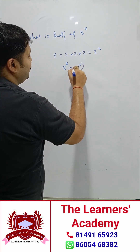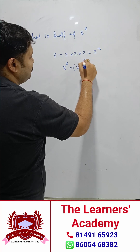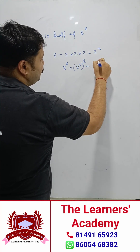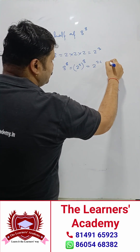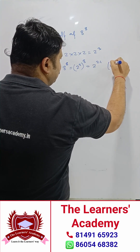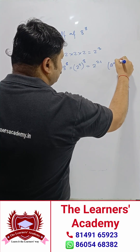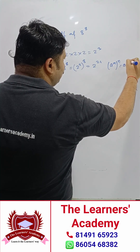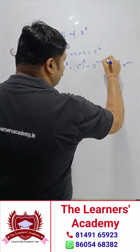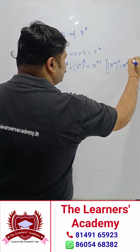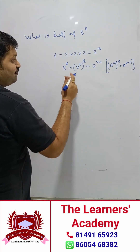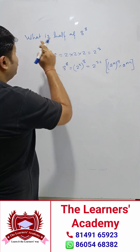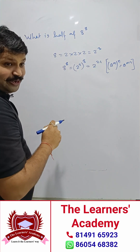8 to the power of 8 is equal to 2 to the power of 3, to the power of 8, which gives us 2 to the power of 24. This is because the identity a to the power of m, to the power of n, equals a to the power of m×n. Now we have to find half of it, so we need to divide by 2.